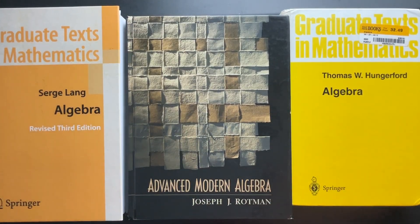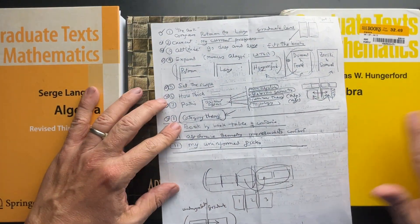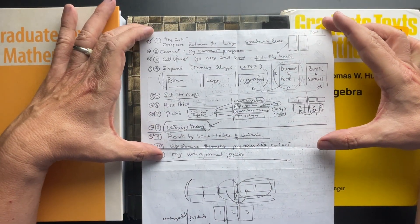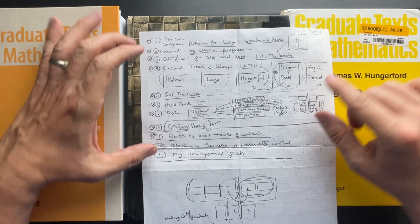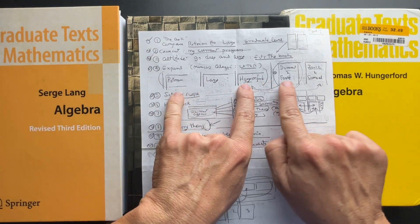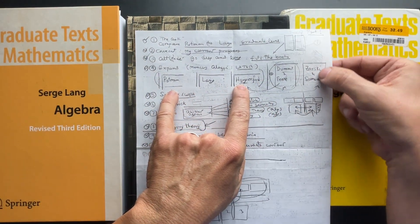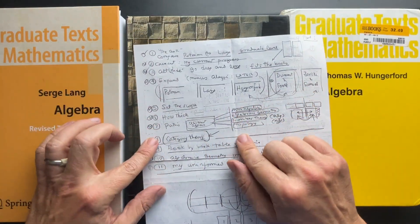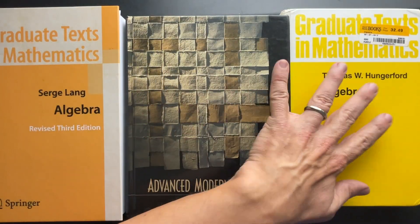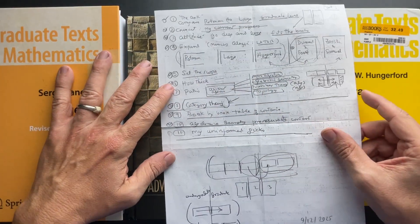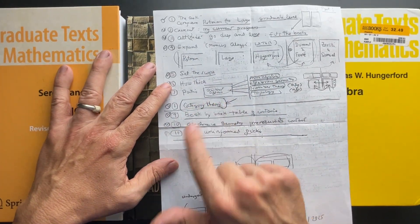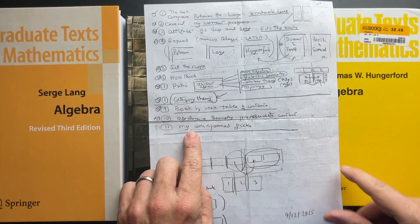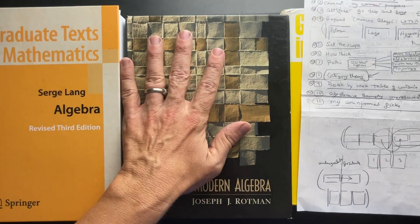I already have a part one, and in part one I laid out basically the premise of how these books fit in the curriculum as I see it. I also showed Dummit & Foote, and I also showed the algebraic geometry books by Zariski and Samuel. Then talked about how all three have an undergraduate book that goes along with them, and they all use category theory. I showed the table of contents, and I made my uninformed pick, which was Rodman.